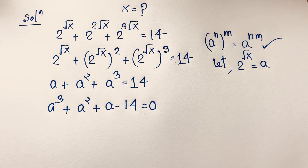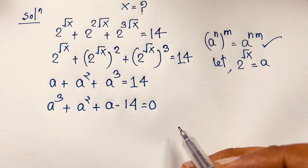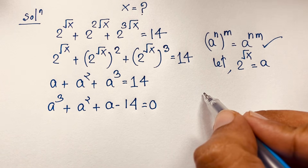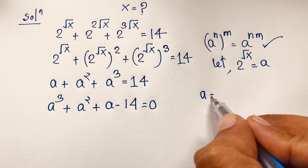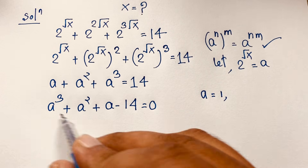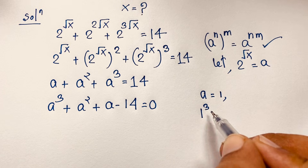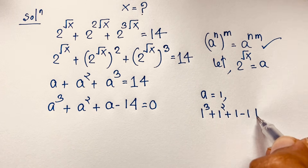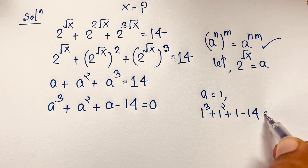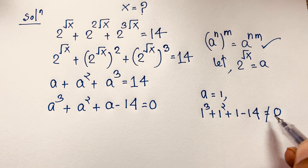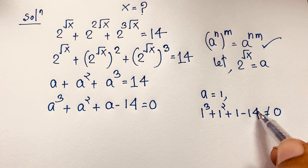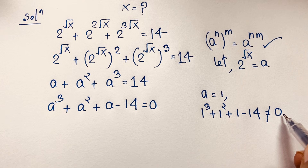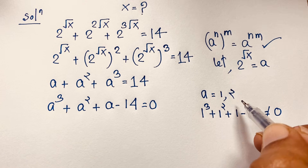Now we solve this using two methods. First, we find one factor of this cubic equation. If we try a equals 1: 1 cubed plus 1 squared plus 1 minus 14 equals 3 minus 14, which is minus 11 — not equal to 0. So a equals 1 is not a factor. Now if we try a equals 2...